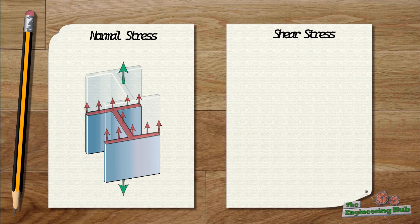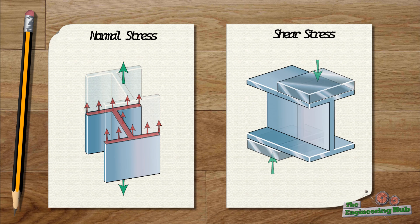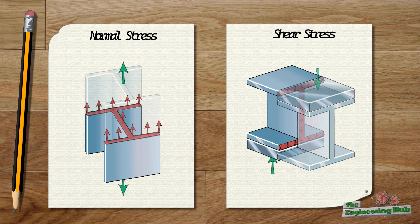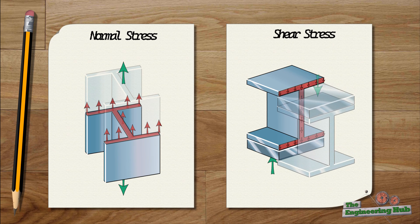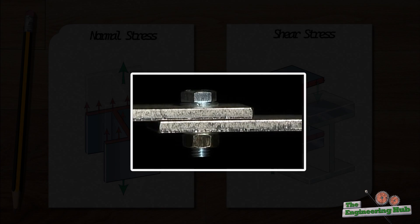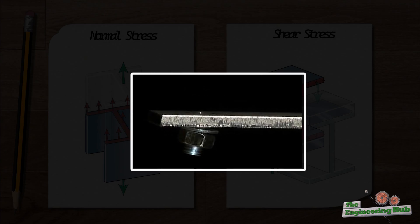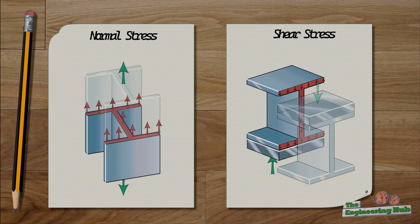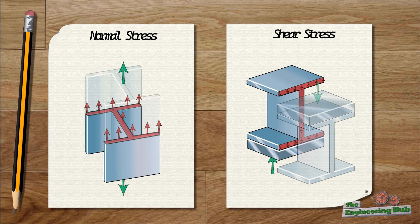Shearing stress is a bit trickier. It arises when the material is subjected to sliding, which forms a shearing plane. A good example of this is a bolt in a bolted connection. Let us look at a beam and try to break down the stress components that arise and identify the most destructive load mechanism that can significantly amplify the stress due to an external load.